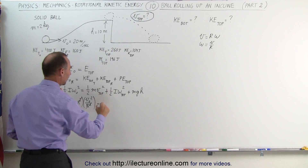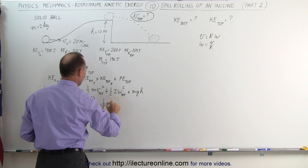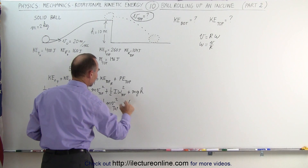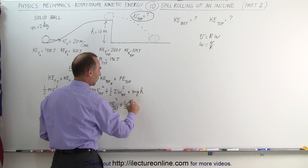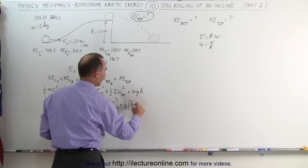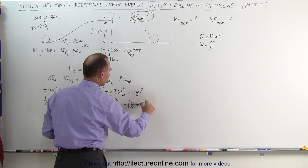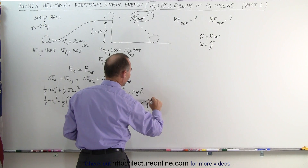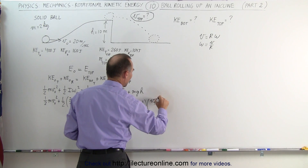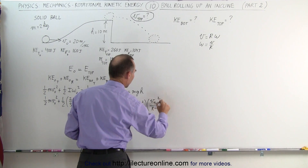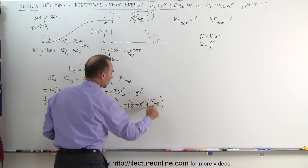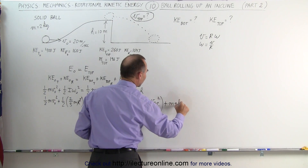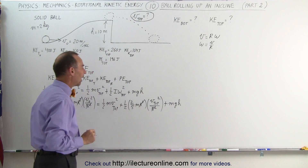On the right side, this equals one-half mv-top squared — which is what we're looking for — plus one-half times the moment of inertia of a solid ball, two-fifths mr squared. And omega at the top is v-top squared divided by r squared. Again the r squared cancel out, and then we still have the mgh, the potential energy when we reach the top.